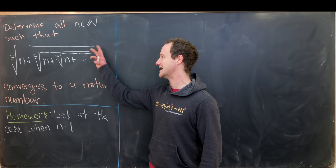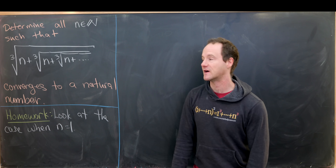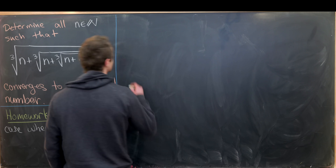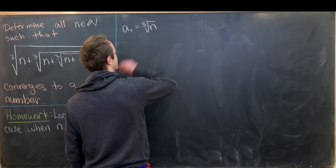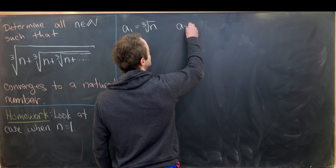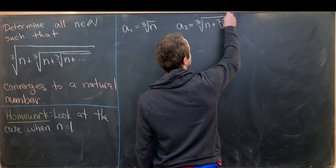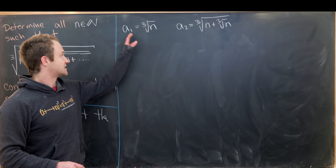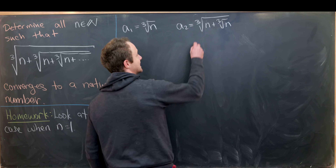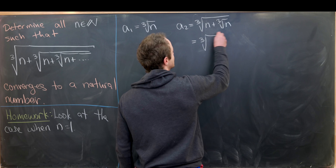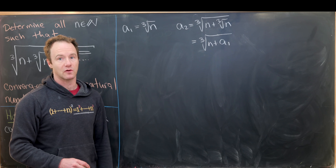I want to start by taking this object and rewriting it as the limit of a recursively defined sequence. So let's define a₁ as the cube root of n, and then a₂ will be equal to the cube root of n plus the cube root of n. Notice that a₂ is equal to the cube root of n plus a₁, which starts building our recursion.